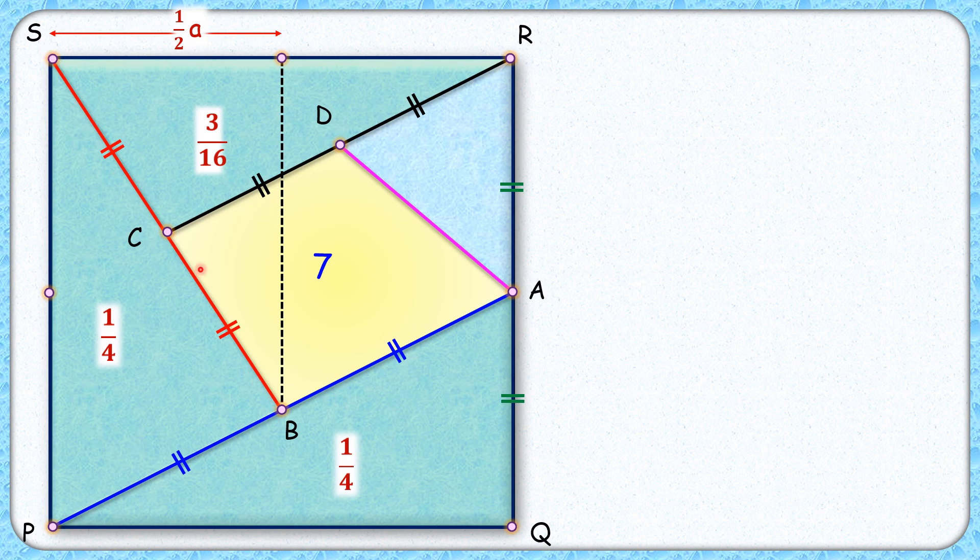Again, C is the midpoint. So if I draw a perpendicular from here, it will divide it into two equal parts. So this part will become A by 4, and this will become 3A by 4.